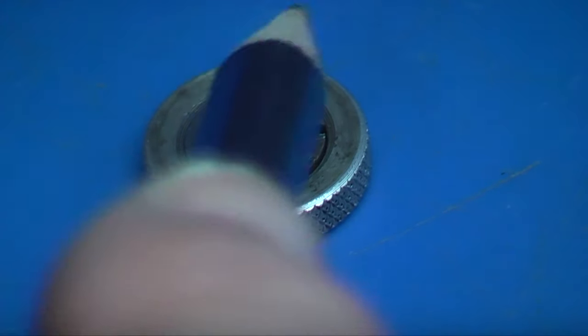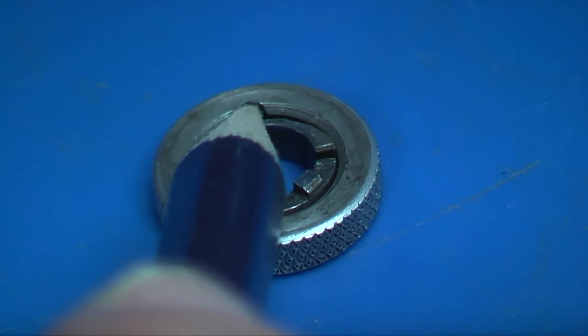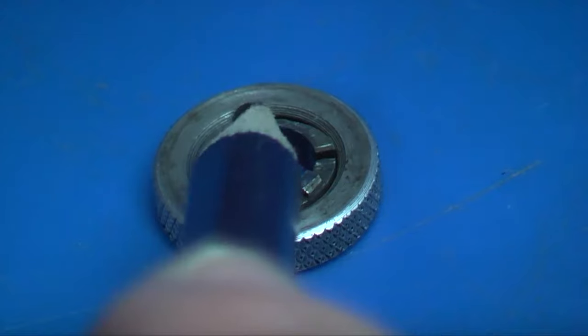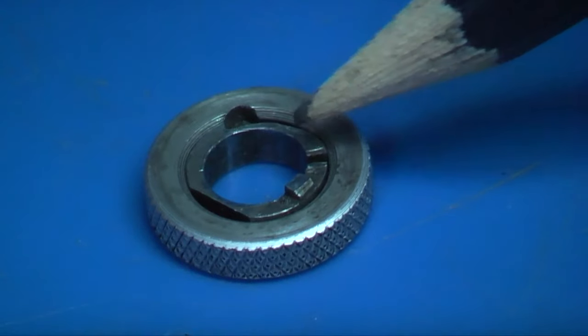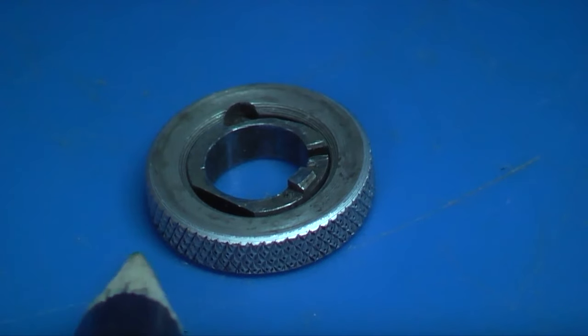As you turn the outside diameter, this little roller rolls down, tightens up on there and closes the gap. So that's how the micrometer lock works.